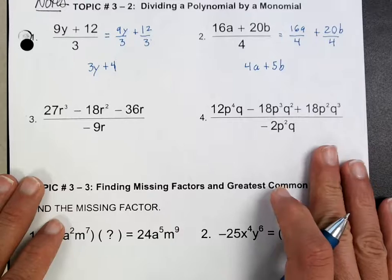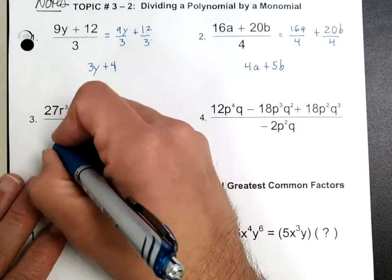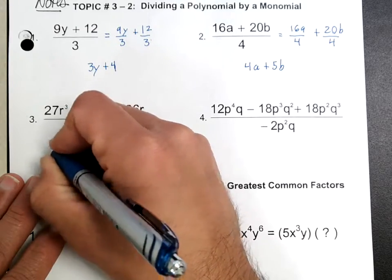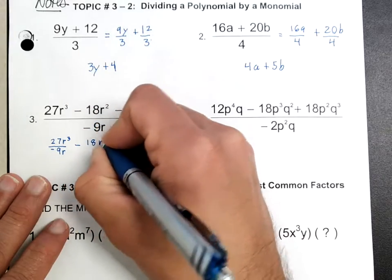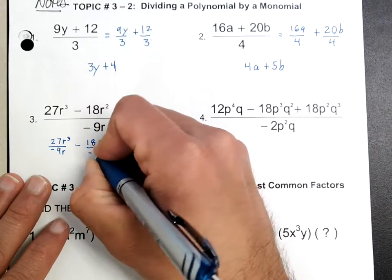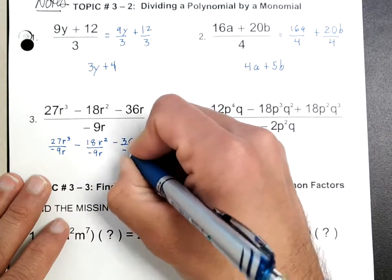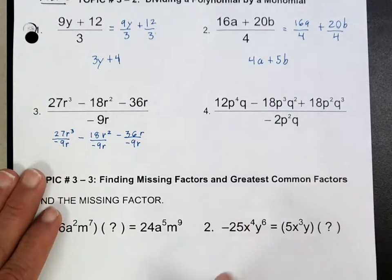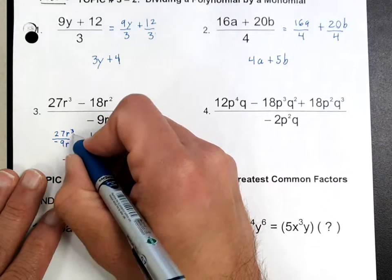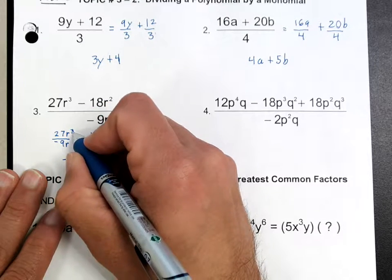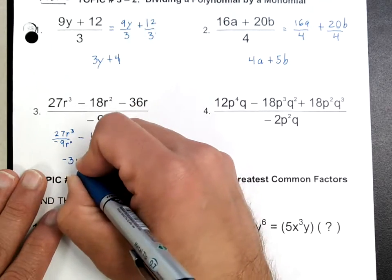Now when it gets more complicated it's the same idea. So if we have negative 27, you might want to rewrite it. This is going to be a combination of what we've done in the past. We're going to divide each one of these terms. 27 divided by negative 9 is negative 3. R cubed divided by R — remember when you divide you subtract the exponent — so it would be an exponent of 1, making this R squared.